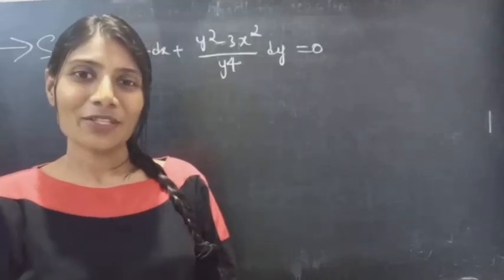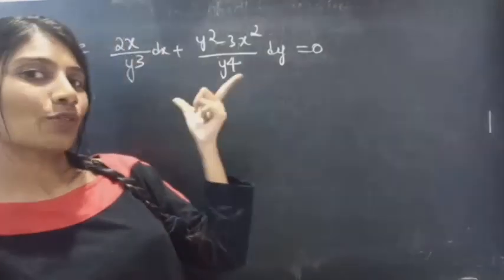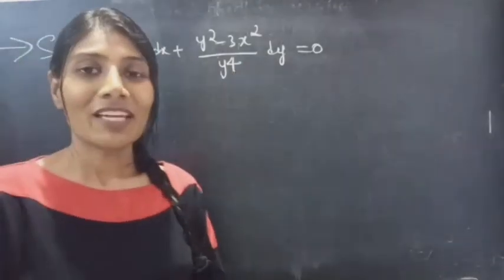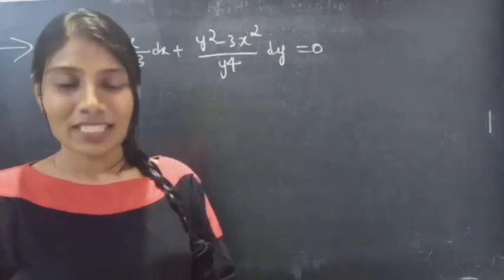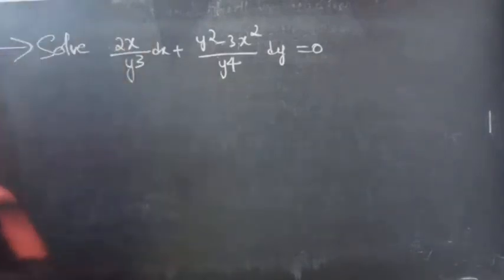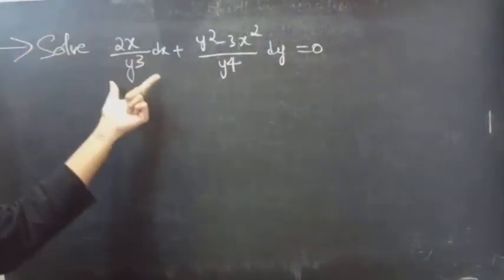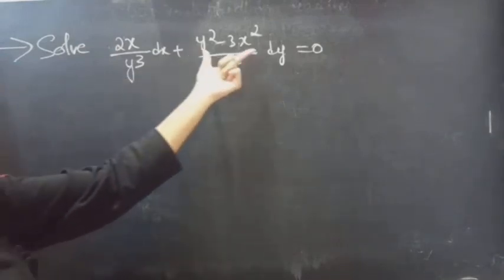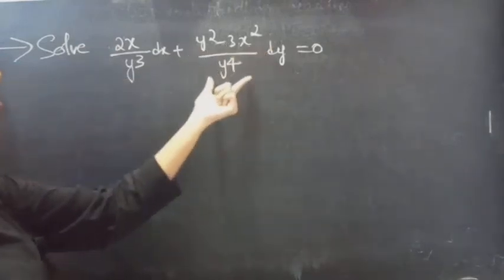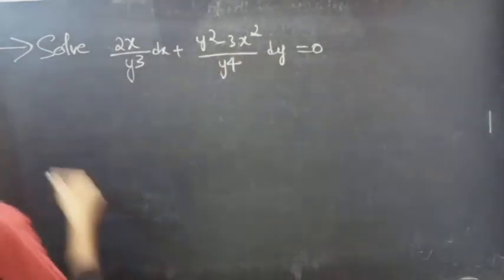Hello everyone, this is Jekalana here. In this video we are going to solve the given exact equation. So let's get started. Problem: solve (2x / y³) dx + (y² − 3x² / y⁴) dy = 0.